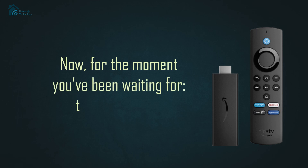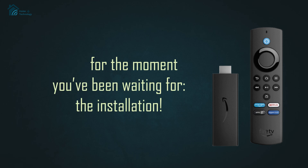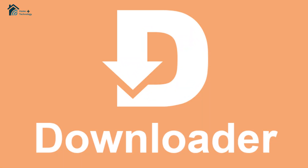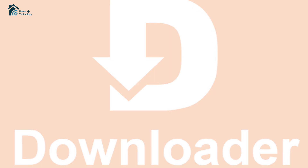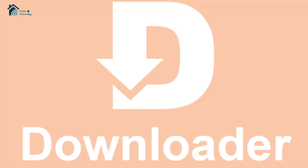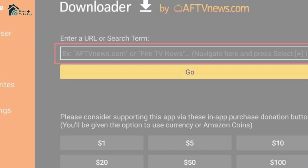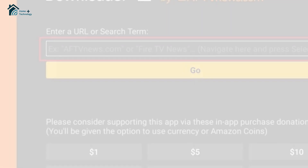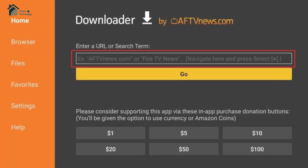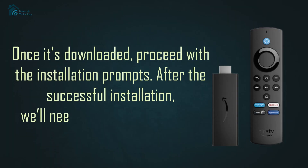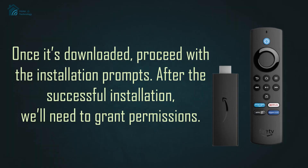Now, for the moment you've been waiting for — the installation. Using the Downloader app, a must-have on all Fire devices, type in the URL for the mouse toggle APK. Once it's downloaded, proceed with the installation prompts.